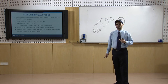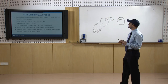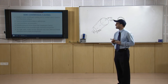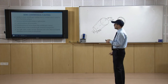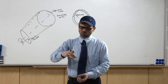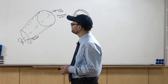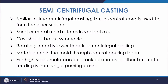The second variety is semi-centrifugal casting. It is similar to true centrifugal casting, but in this case a central core is provided to form the inner surface. The mould rotates on a vertical axis. Rotation speed is lower than true centrifugal casting. Metal enters the mould through a central pouring basin, and moulds can be stacked one over another to increase productivity.